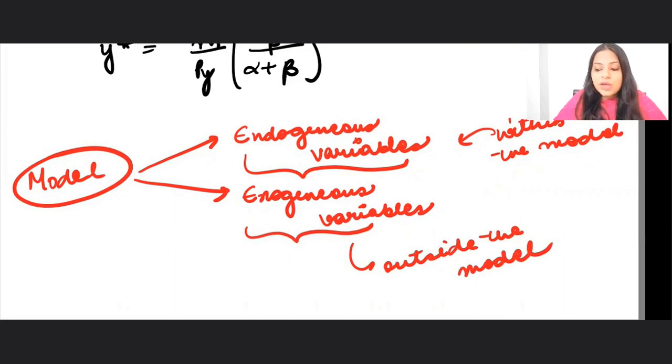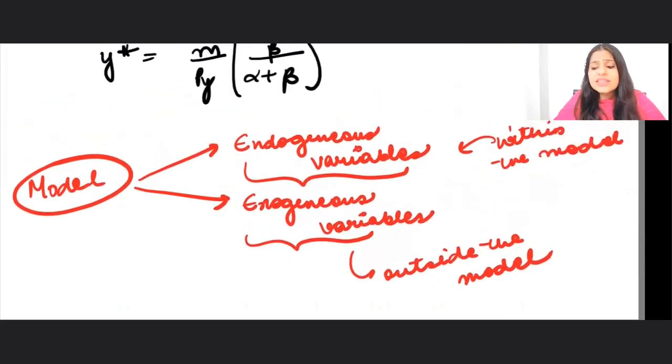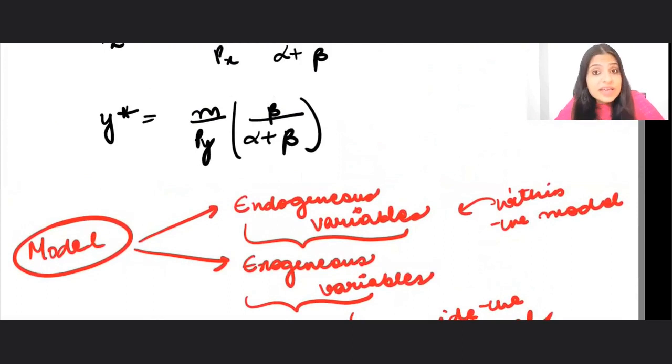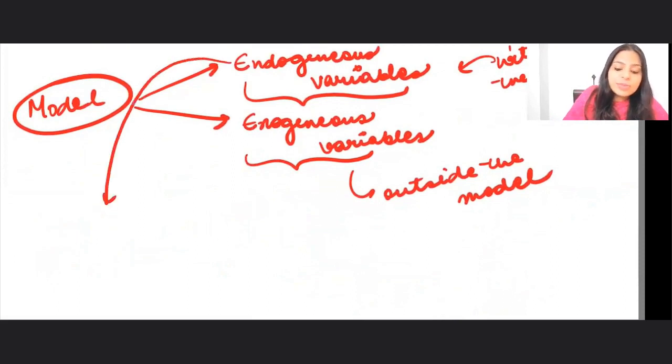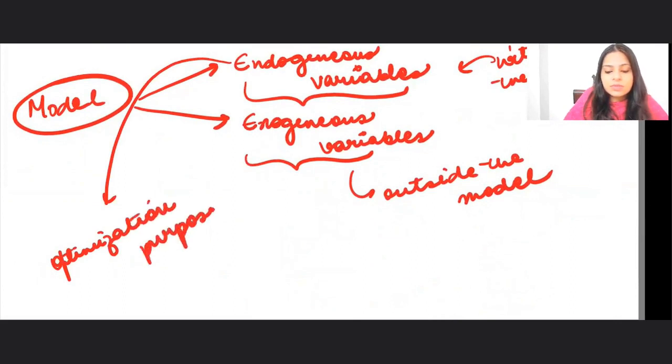Now, when we say that a variable is defined within the model or a variable is determined within the model, then in that case, we always use that variable for optimization purpose.